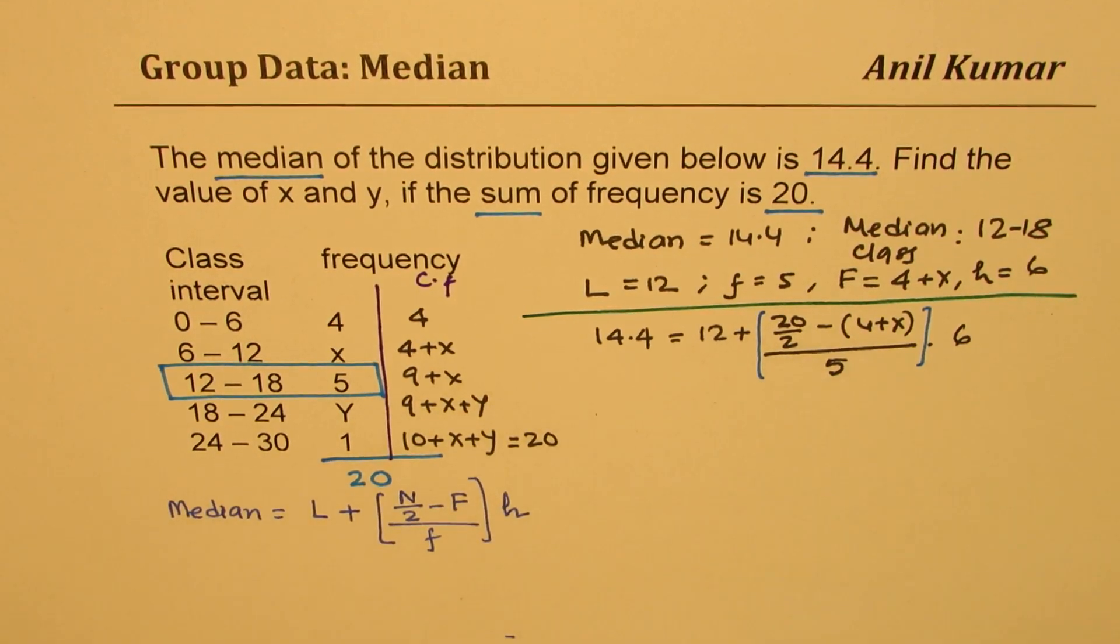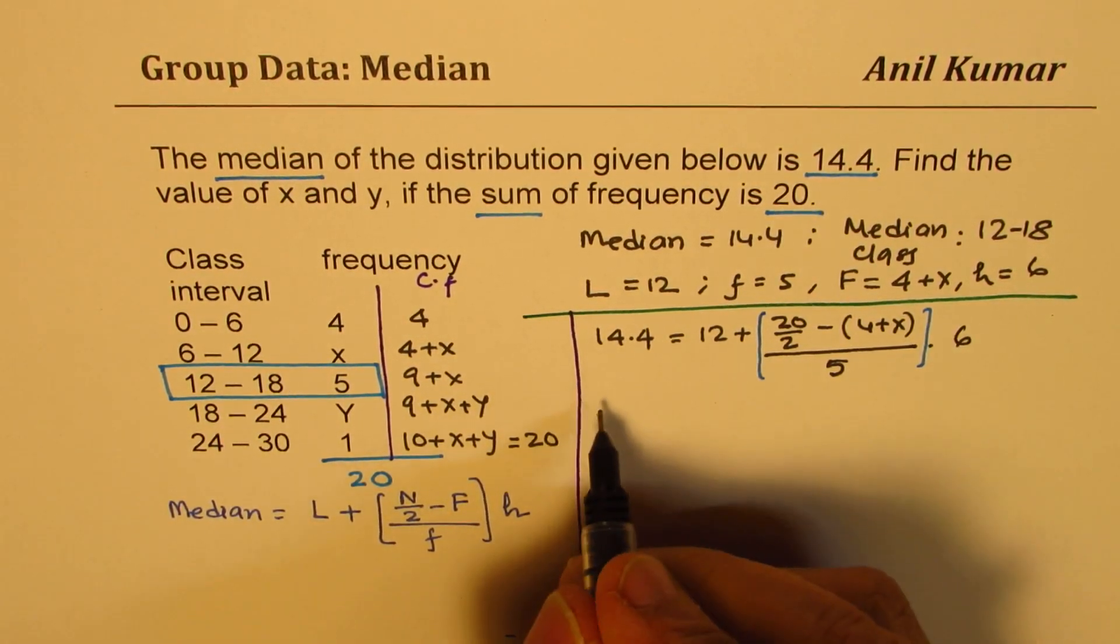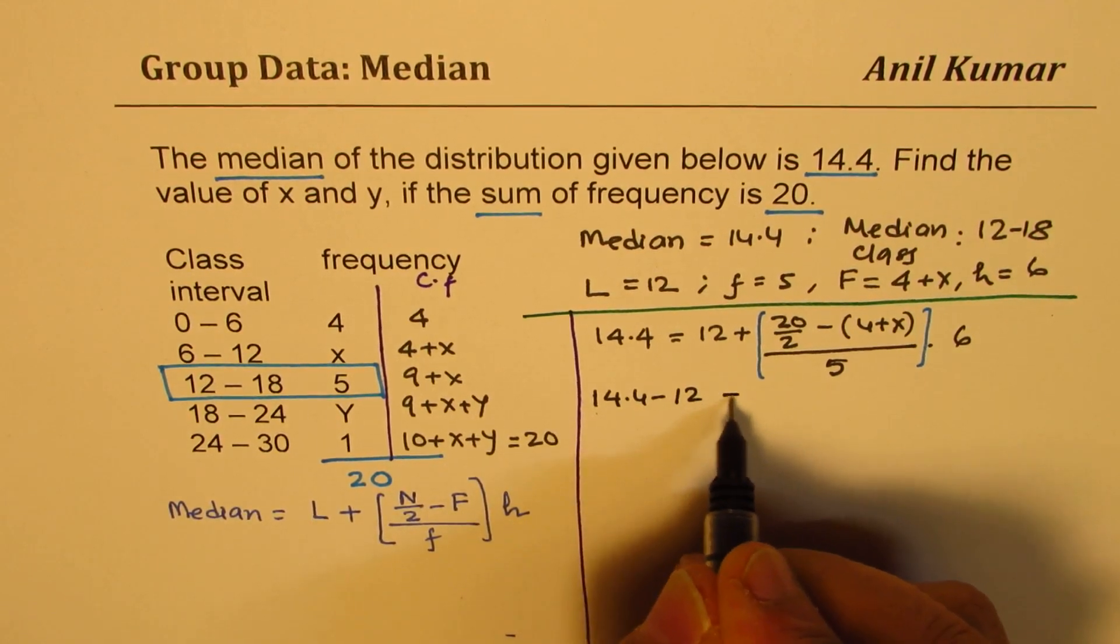So let's solve this. To solve this we'll take 12 on the left side. So we get 14.4 minus 12 equals 2.4.